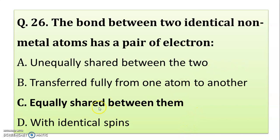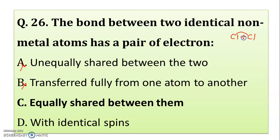The bond between two identical non-metal atoms has a pair of electrons — unequally shared? No. Transferred fully from one atom to another? No, that is wrong. Equally shared between them? Yes — here there is equal sharing between the two identical atoms, for example chlorine (Cl2). The correct answer is: equally shared between the two combining atoms.